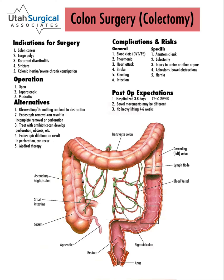The alternatives to doing surgery are observation — which means, of course, do nothing. If it's a tumor, that can grow larger and lead to obstruction. If it's a polyp, it can become a tumor. If it's diverticulitis, that can get worse or cause a perforation. Endoscopic removal can be done with most polyps, but with large polyps you might not get it all out, or you might make a hole in the colon while doing that.